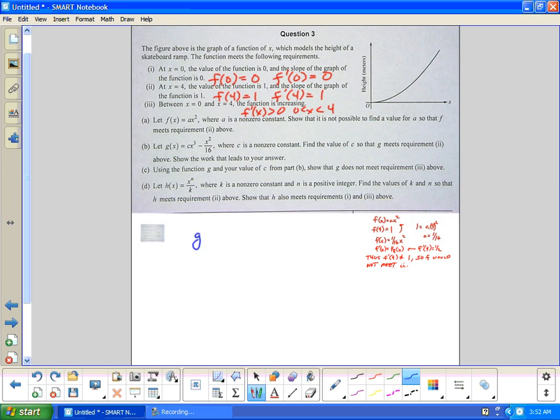We'll start with g(4) would equal one. So one equals c times four cubed minus four squared over 16. If I solve this, this is one, bring it over, it makes two. So I get c is one-thirty-second.